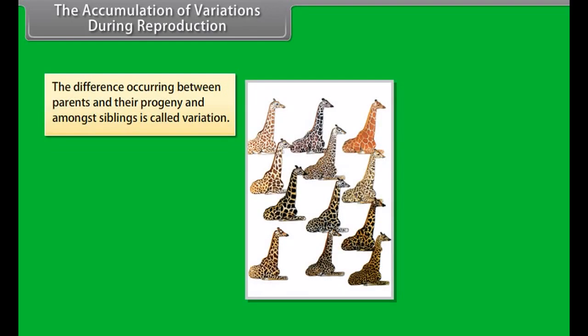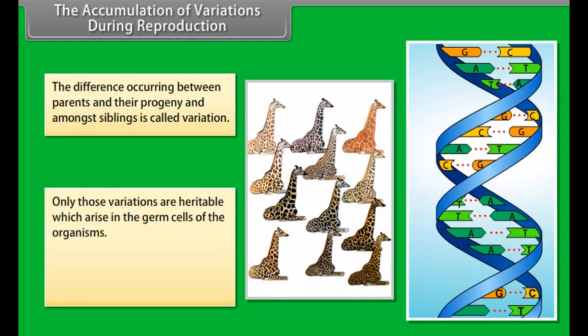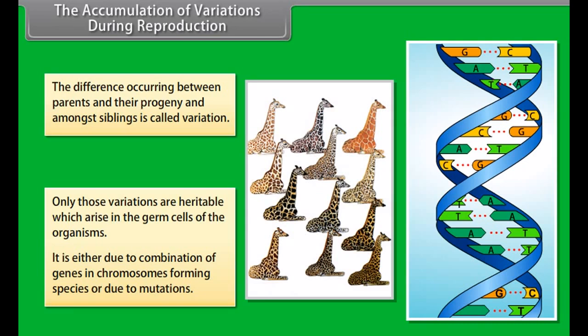The accumulation of variations during reproduction: the difference occurring between parents and their progeny and amongst siblings is called a variation. Only those variations are heritable which arise in the germ cells of the organisms. It is either due to combination of genes in chromosomes forming species or due to mutations.